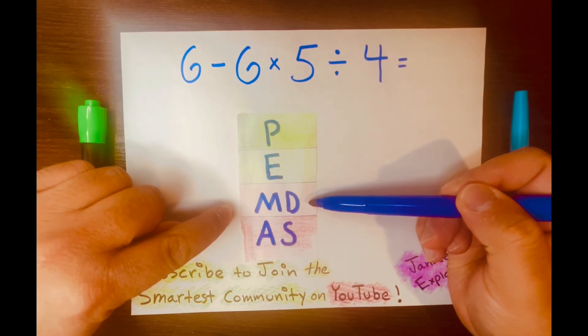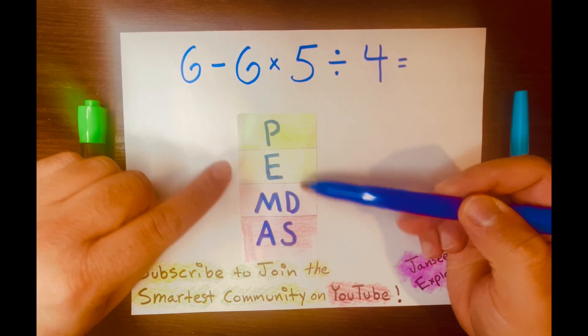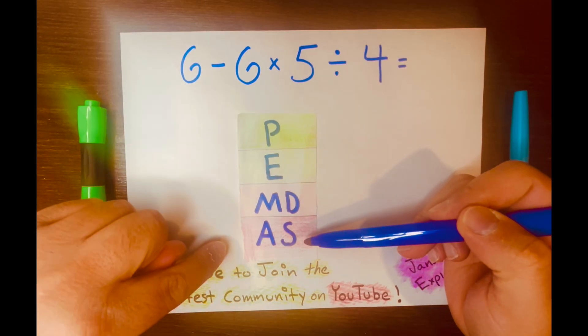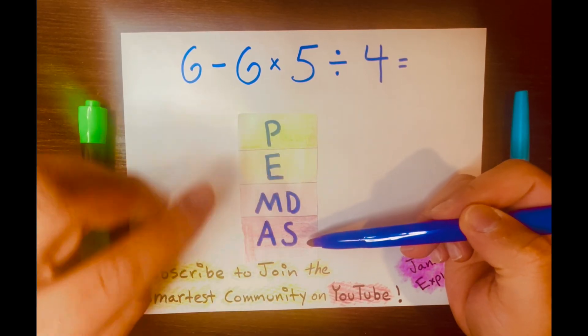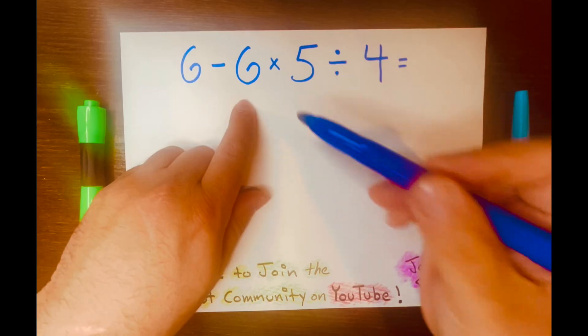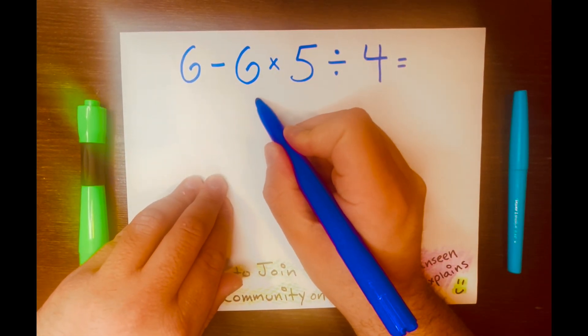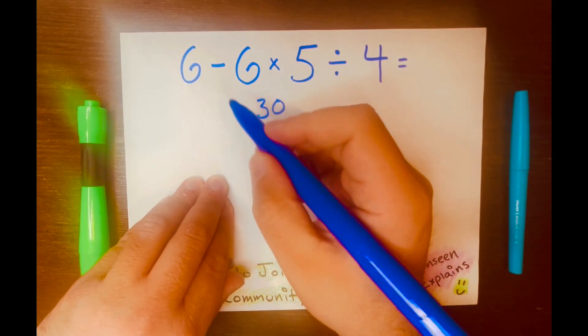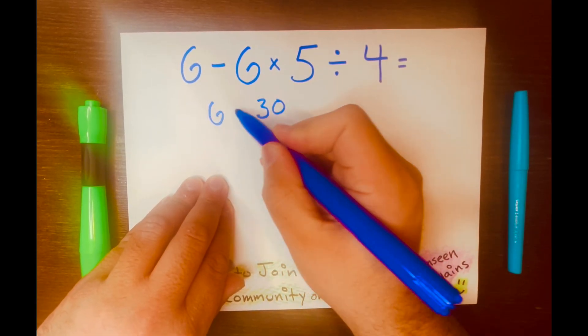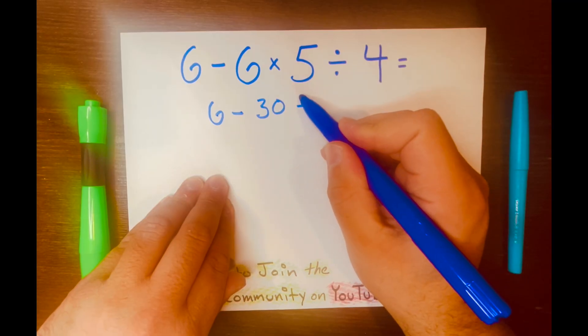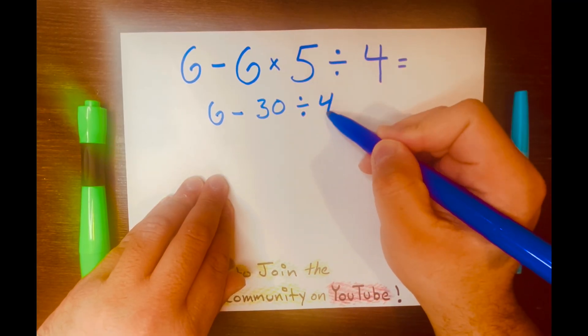PEMDAS is telling me to multiply 6 times 5, not subtract 6 minus 6. So, what is 6 times 5? 30. I'll write 30, and then bring down the 6 minus, and bring down the division symbol and the 4 down.